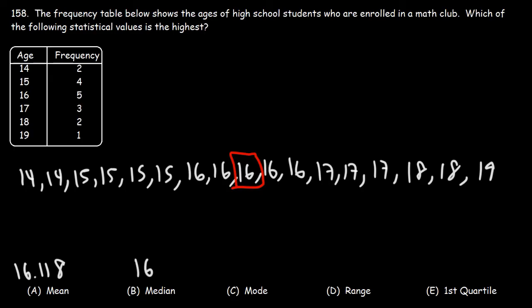Now, what about the mode? The mode is the number that occurs most frequently. The number with the highest frequency is 16. So that's the mode.